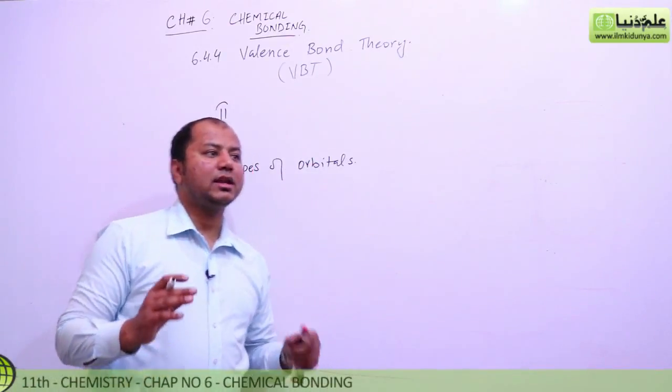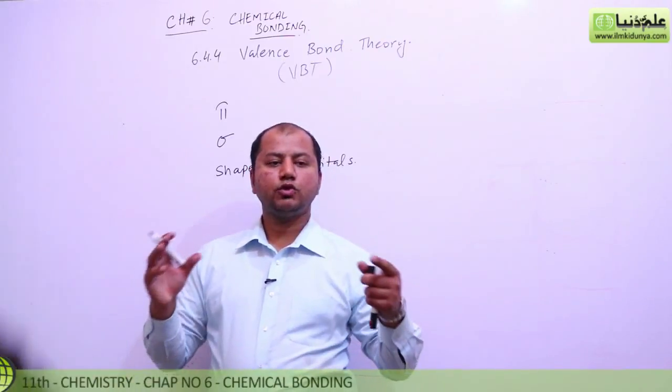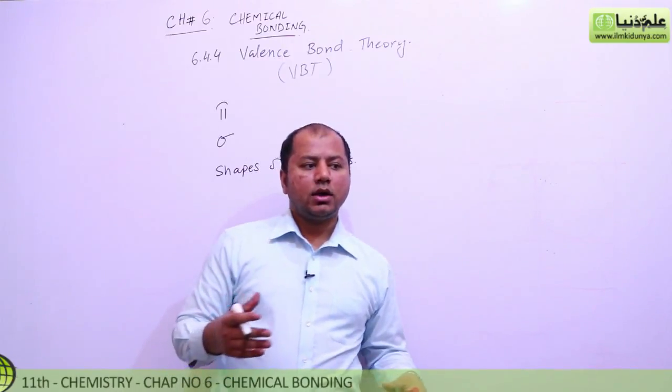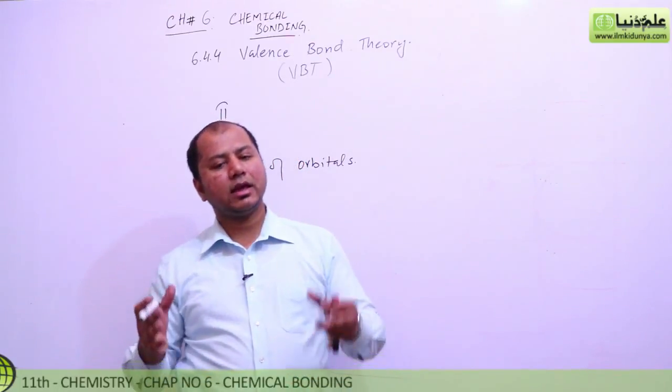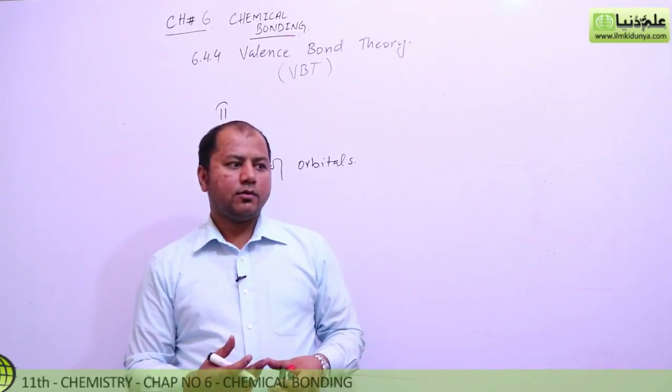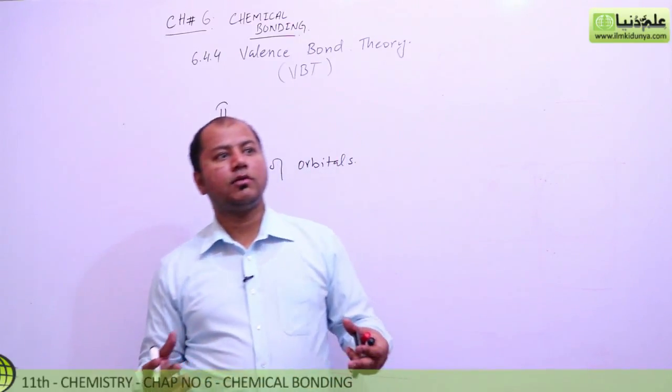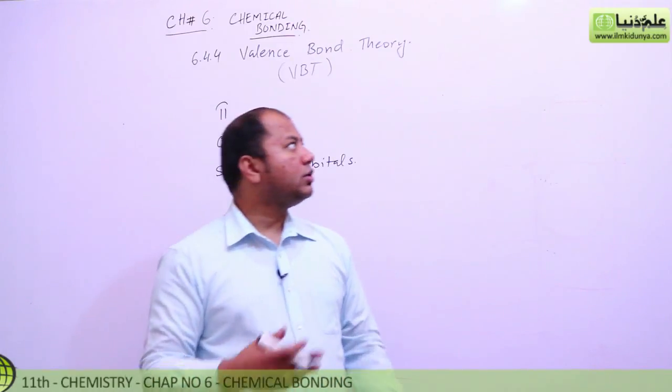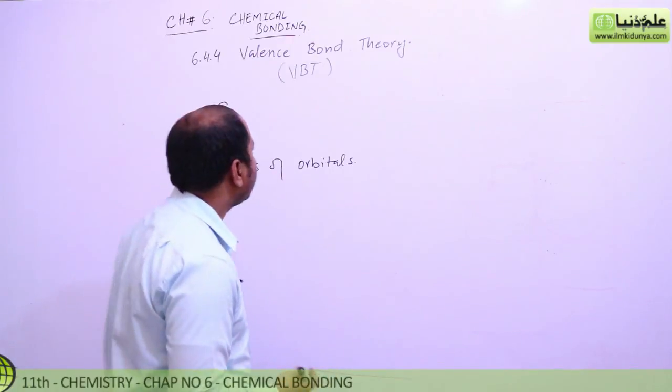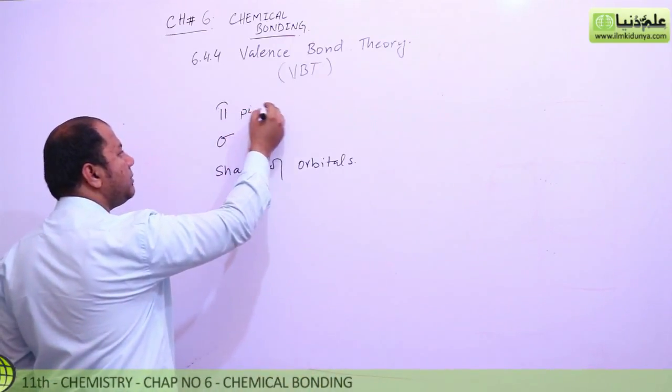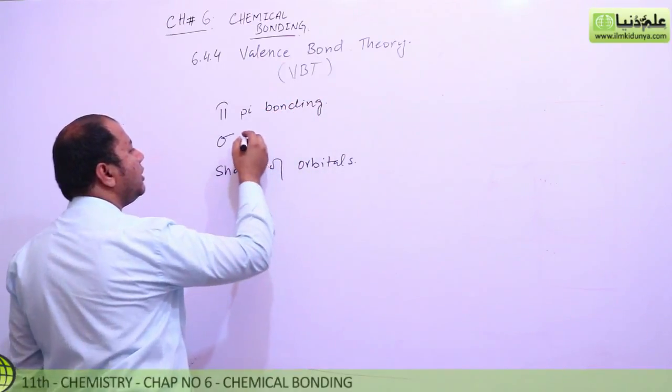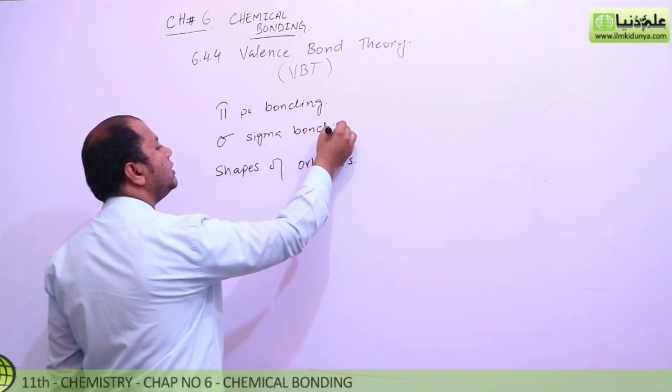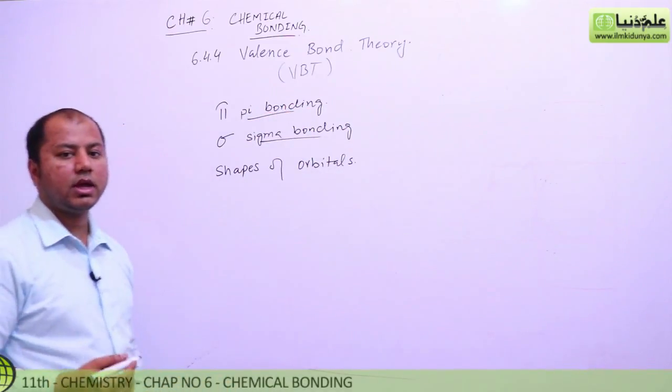Valence bond theory explains how the valence shell interaction determines the geometry and shape of molecules. In this theory, bonding comes from electron orbital overlap. To explain this conveniently, we define pi bonding and sigma bonding. These two types of bonding depend on the shape of the orbitals.